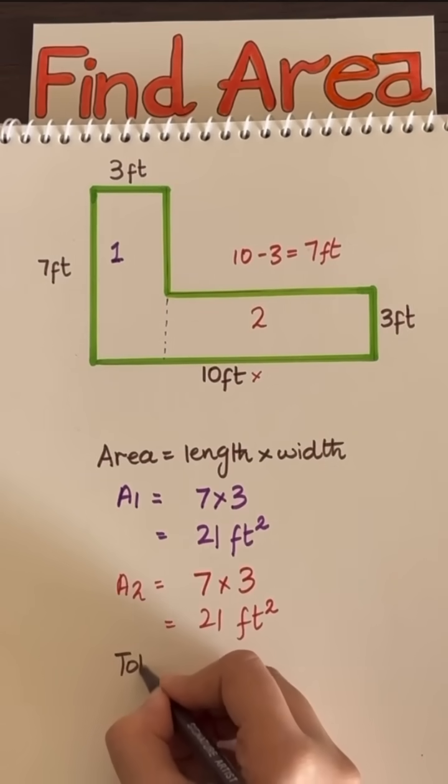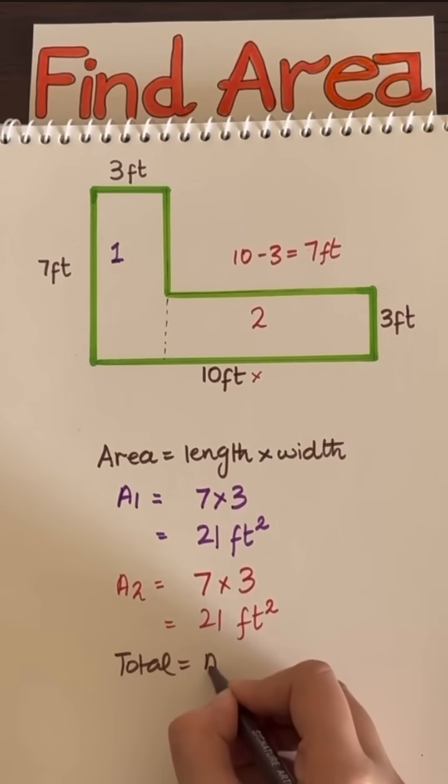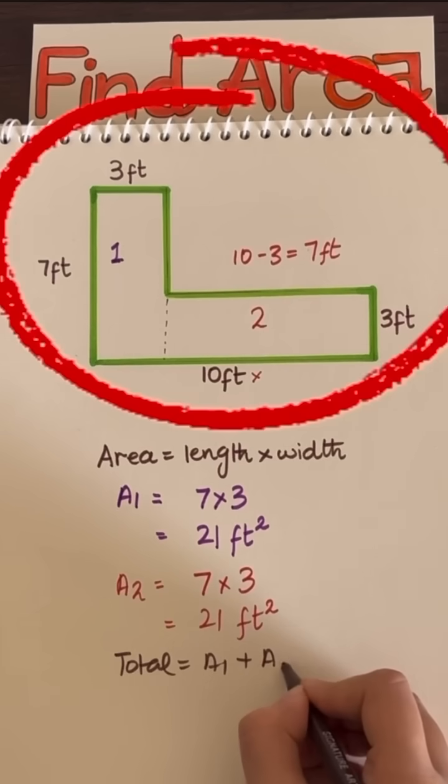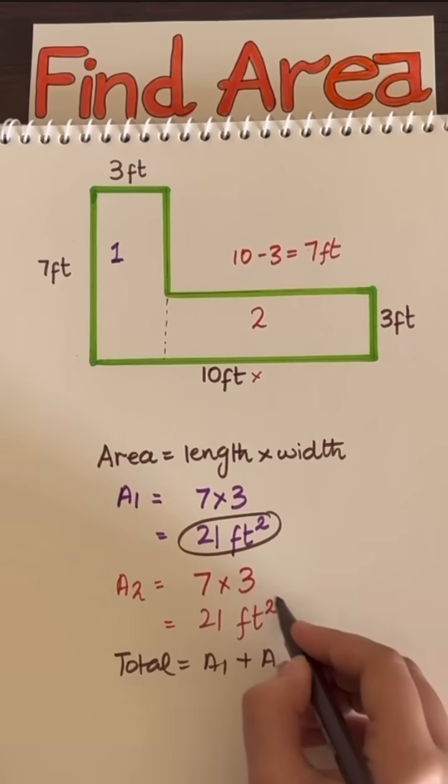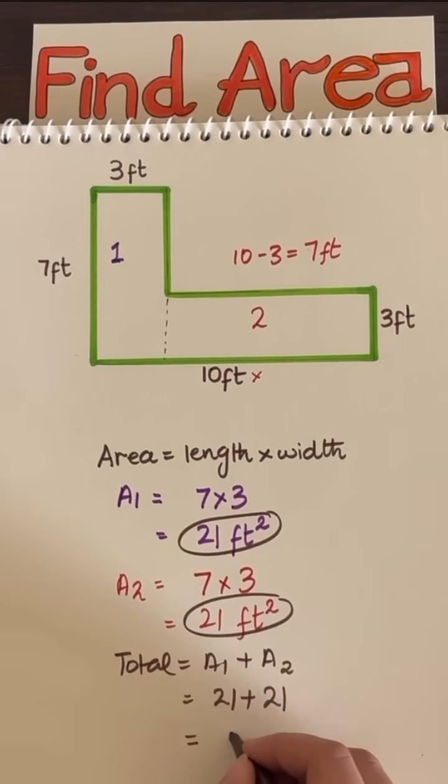Now let's add all the areas of all the rectangles we just found to get the area of the entire figure. So 21 square feet plus 21 square feet will equal 42 square feet.